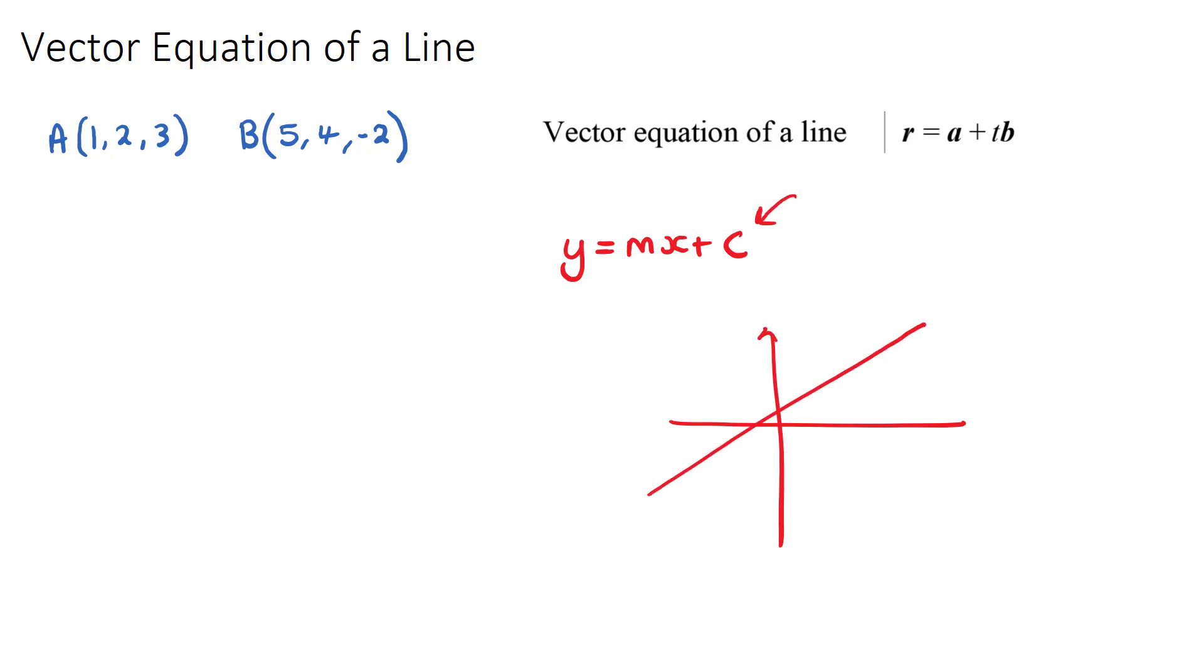And c was the y-intercept, which was some point that we knew our line passed through, and m was the gradient, which told us the direction that the line then travels. And those are the two things that we needed: a direction, which is the gradient, and we needed some point, which was often given in our questions. And it's actually very similar to the vector equation of a line.